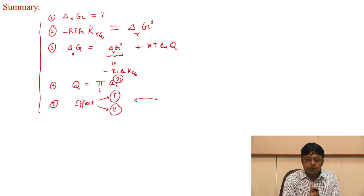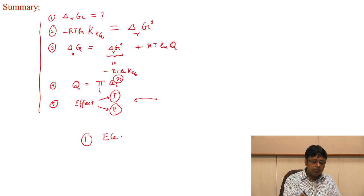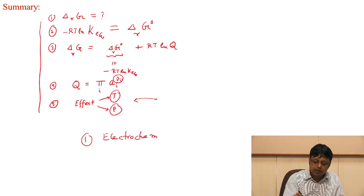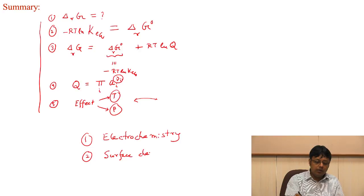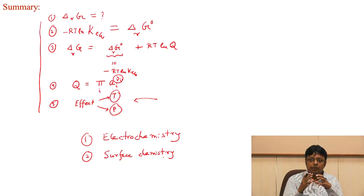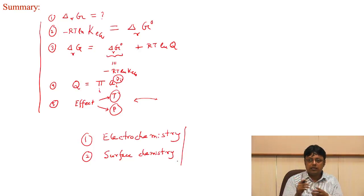Next, we will discuss two applications of equilibrium thermodynamics. The first is electrochemistry: how a galvanic cell generates electricity, how to write the electromotive force, and how to connect it to the standard reaction Gibbs free energy. The second is surface chemistry: the thermodynamics of an interface between two bulk phases, whether molecules prefer to stay in the bulk or at the interface, and how to classify molecules based on that characteristic.